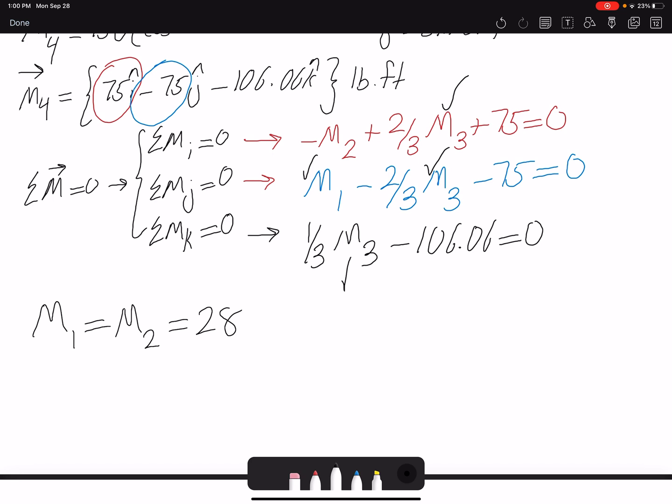So our M1 and M2 would be 287 pound-feet, and then M3 would be 318.18 pound-feet.